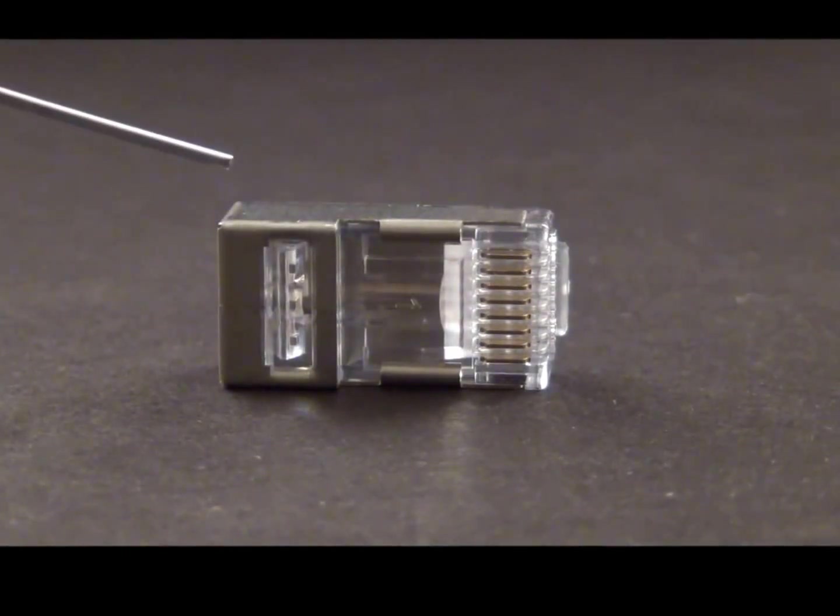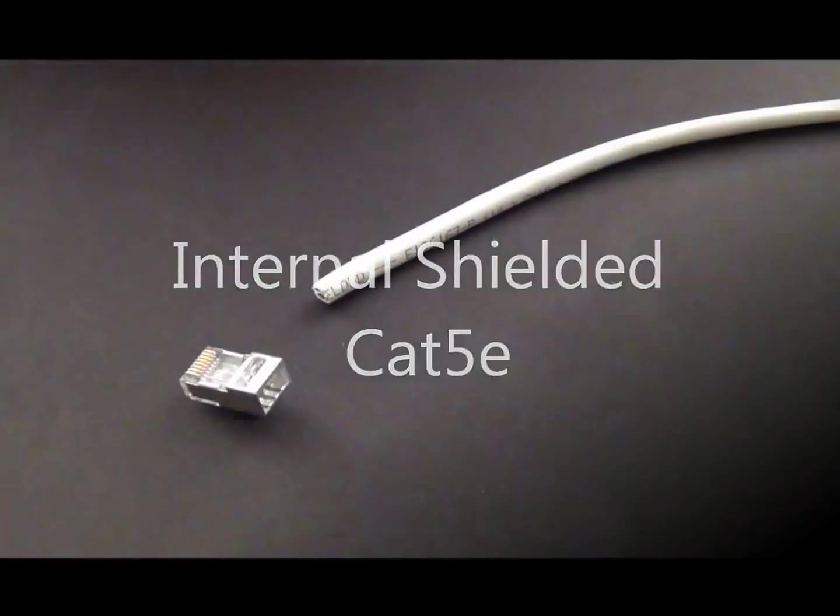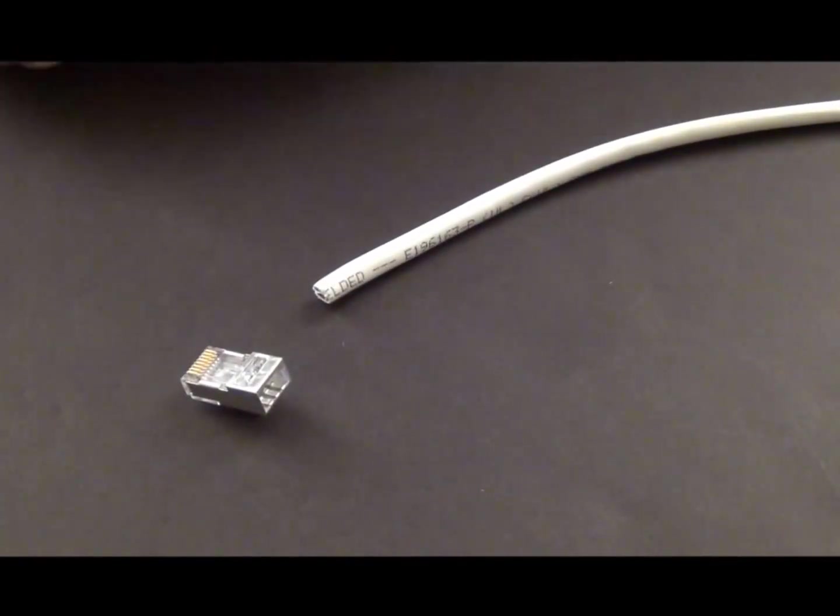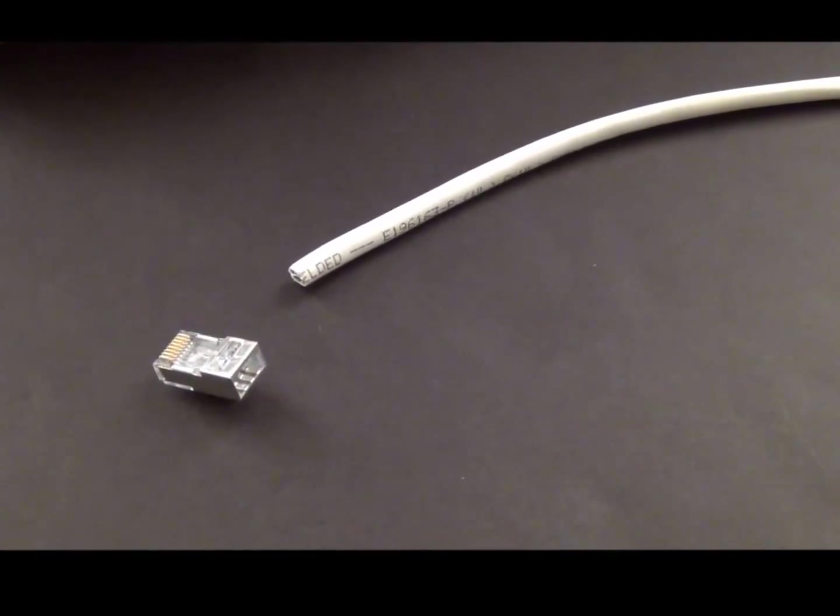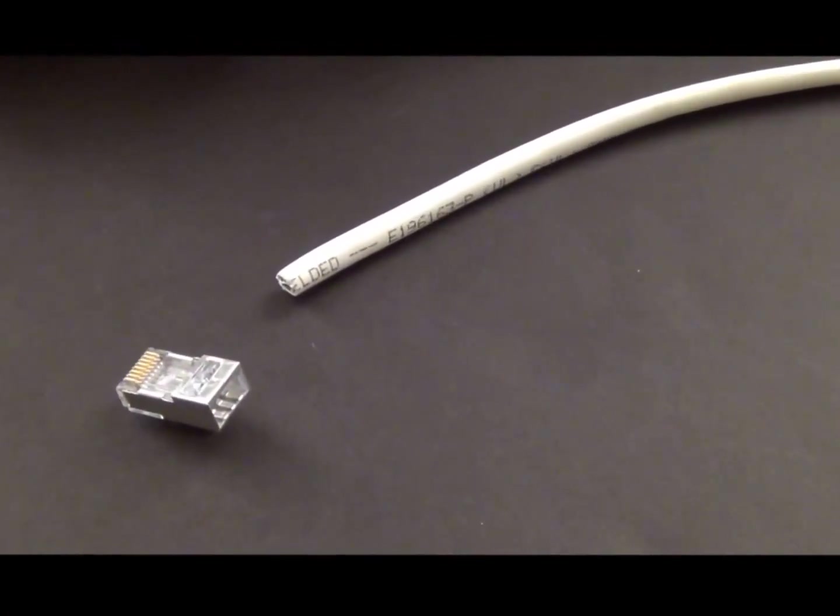It works. One connector, Cat 5E, Cat 6, it's all in the prep. Okay, our first termination we're going to do is on the internal shield EZ RJ45. And we're going to do a shielded Cat 5E cable.